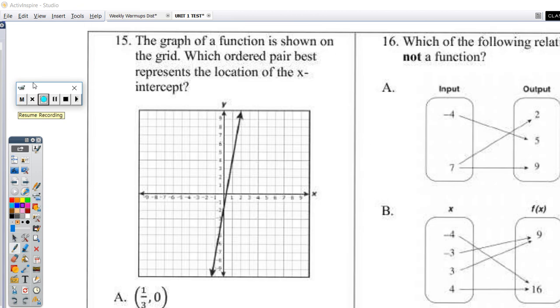Question 15. The graph of a function is shown on the grid. Which ordered pair best represents the location of the x-intercept? We want to know where does this graph cross the x-axis? And so if we look right here, this is our x-axis. We want to know where does that graph cross the x-axis?